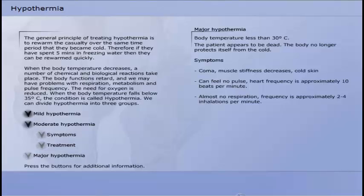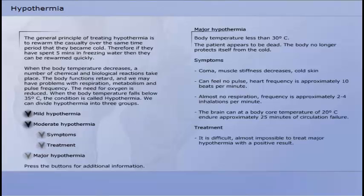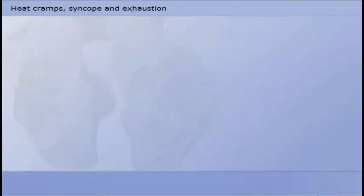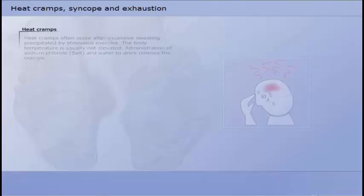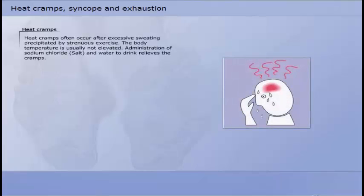The symptoms are coma, muscle stiffness decreases, cold skin, can feel no pulse, heart frequency is approximately 10 beats per minute, almost no respiration, frequency is approximately 2 to 4 inhalations per minute. The brain can, at a body core temperature of 20 degrees Celsius, endure approximately 25 minutes of circulation failure. It is difficult, almost impossible to treat major hypothermia with a positive result. Treatment as for mild hypothermia. Immediate transportation to a hospital.